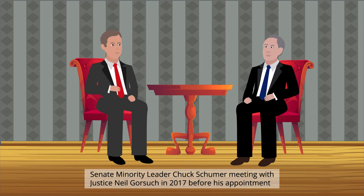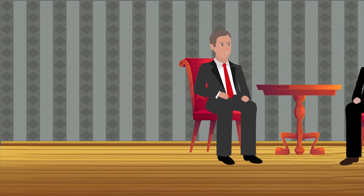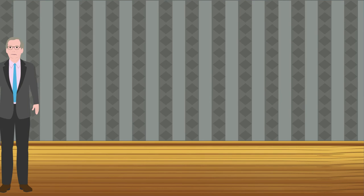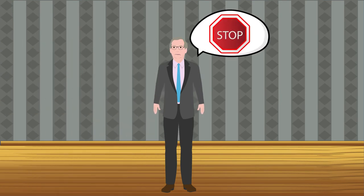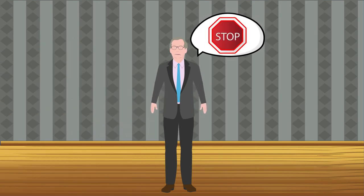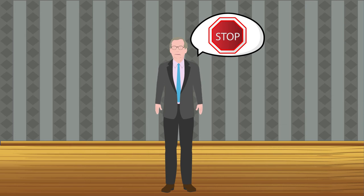Senators often discuss with the nominee on how they view the law. The Senate Judiciary Committee can then decide to hold a formal hearing on the nominee. However, they have refused to do so in the past, stopping the confirmation process right there. For example, in 2016, Judge Merrick Garland's nomination to the Supreme Court by President Barack Obama was ignored by Senate Republicans in an unprecedented move.